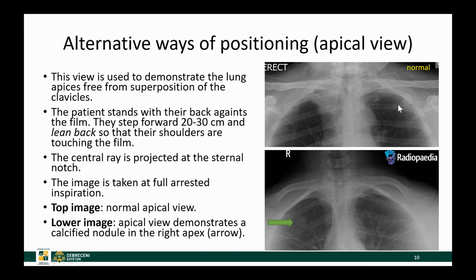You can see that the clavicles appear to project over the apices, so they are no longer obscuring these apical areas on either side. The lung apices are free of any abnormalities. However, in this right lung we can see a round pulmonary nodule which might have been visible on the PA chest x-ray, and thus this apical view was requested to confirm the lesion.